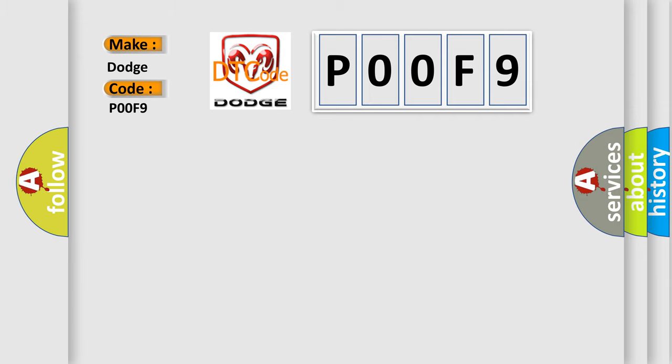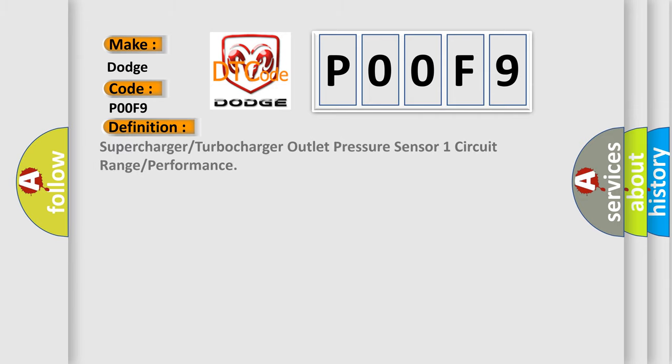The basic definition is: Supercharger or Turbocharger Outlet Pressure Sensor 1 Circuit Range/Performance. And now this is a short description of this DTC code.